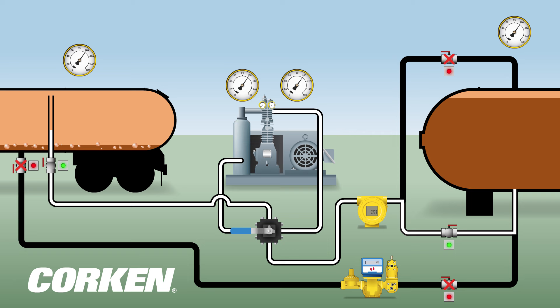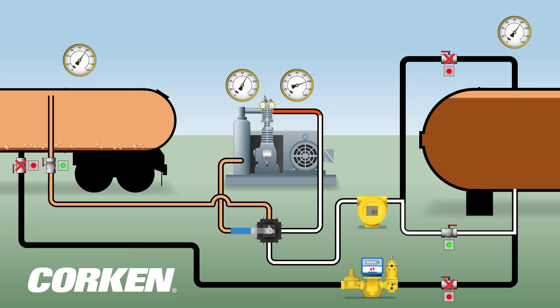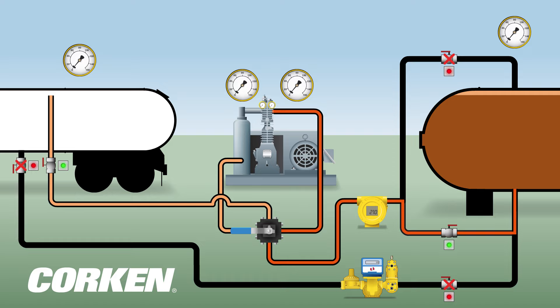The liquid heel — the remaining liquid in the transport tank — boils off during the recovery process. The compressor compresses the vapor and increases the vapor pressure as it is pushed into the bottom of the storage tank. The vapor recovery process is complete when the desired evacuation pressure is reached.